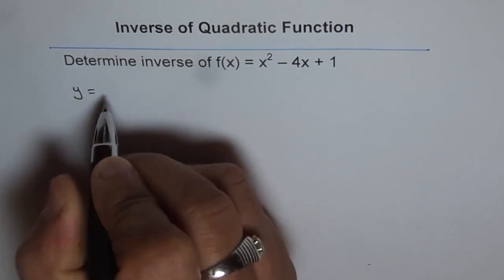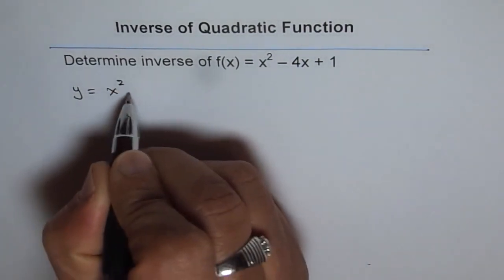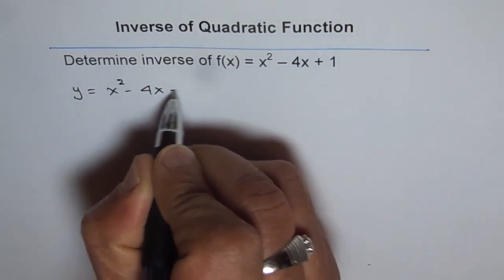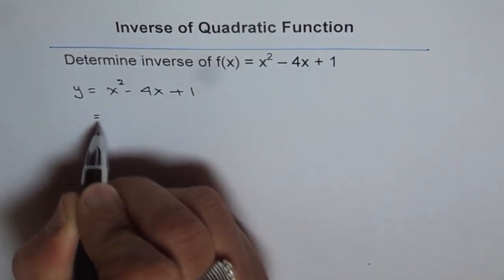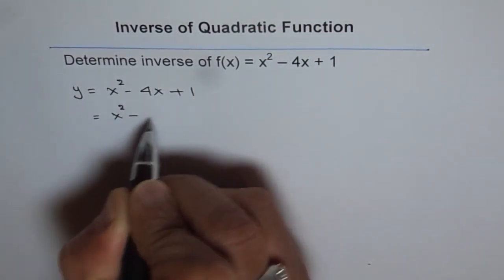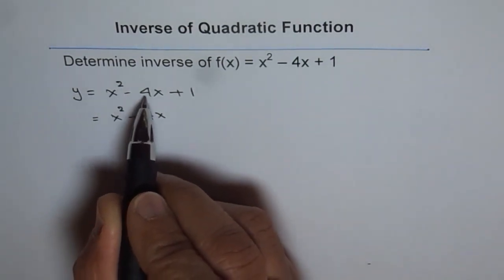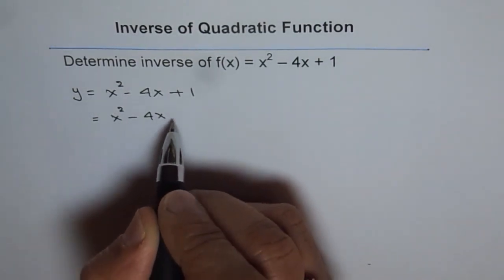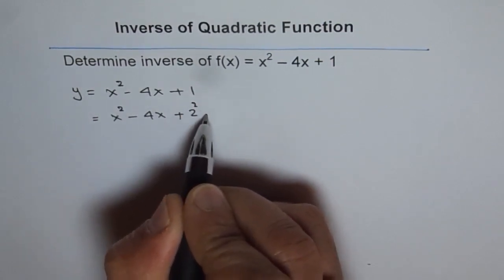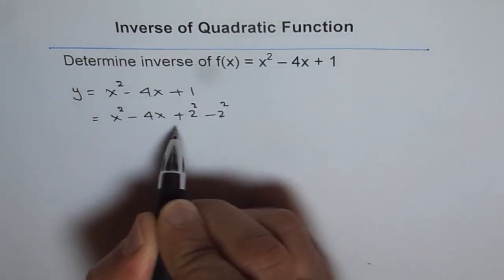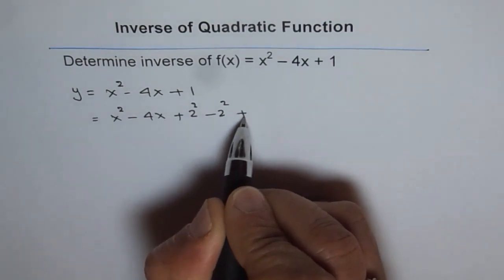So we have y = x² - 4x + 1. So we will do completing the squares. We get x² - 4x. To complete the squares, we have to take a number which is half of 4 and square it. So half of 4 is 2. So we will square it and subtract the same number so that the equation is maintained.